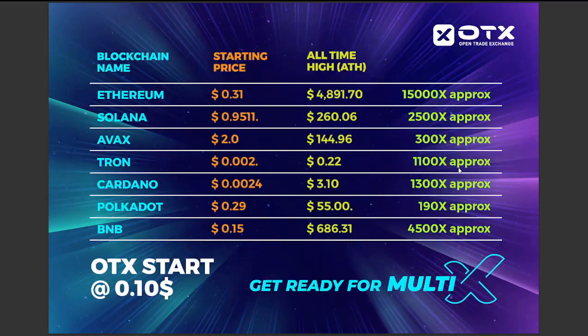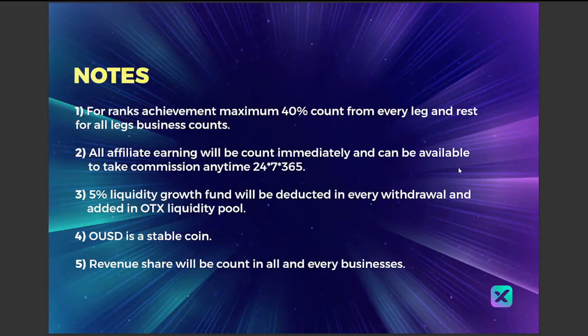Let's move on to more information. Here we have information about the blockchain name, starting price, and all-time high. For rank achievement: maximum 40% count from every leg, and the rest from all leg businesses count. 5% liquidity growth fund will be dedicated on every withdrawal and added to the OTX liquidity pool.